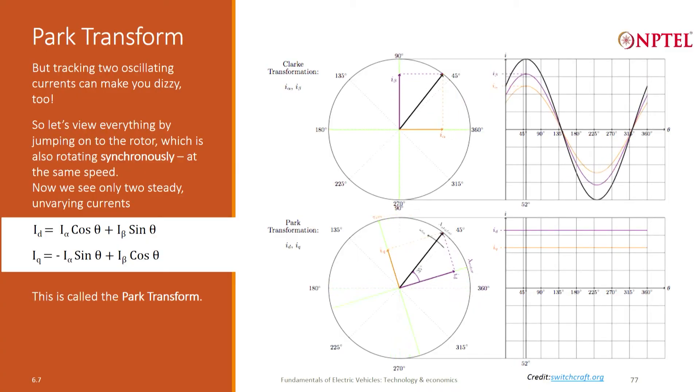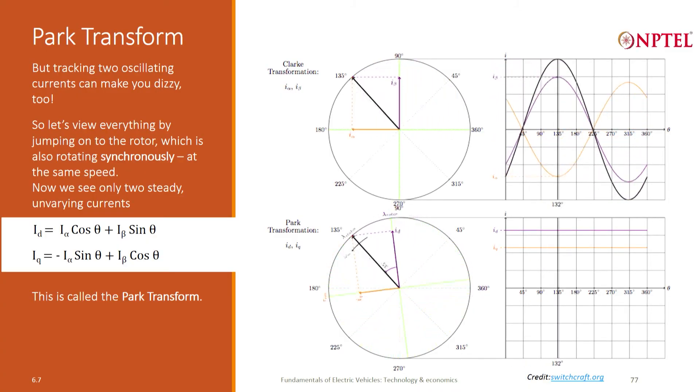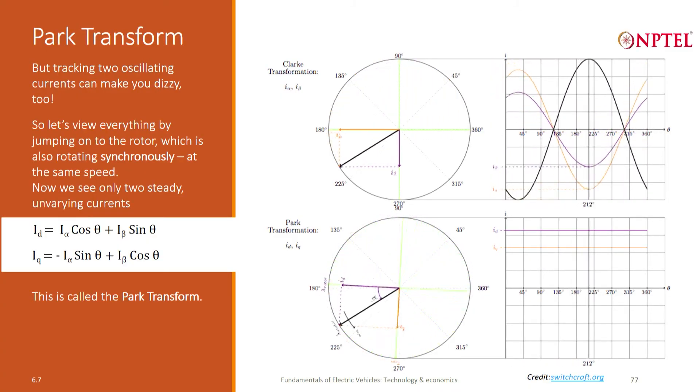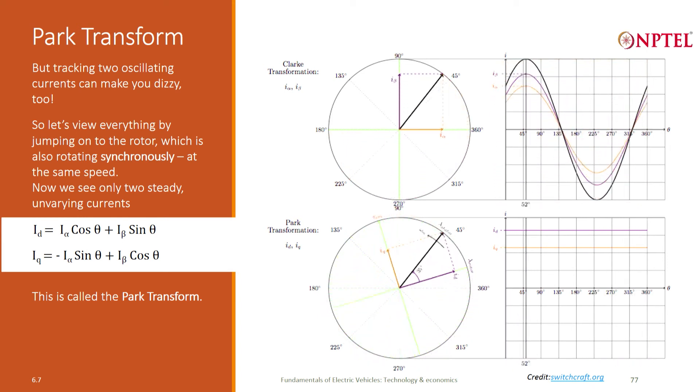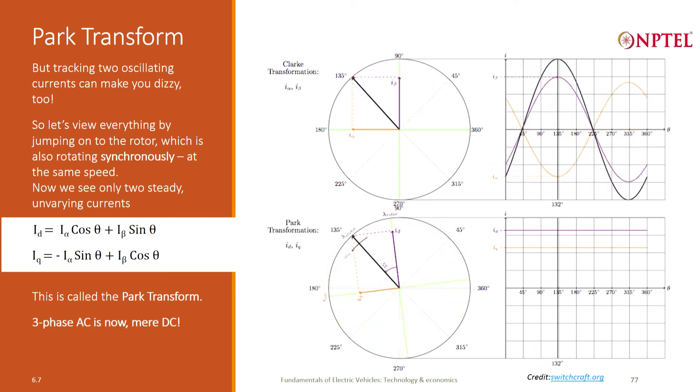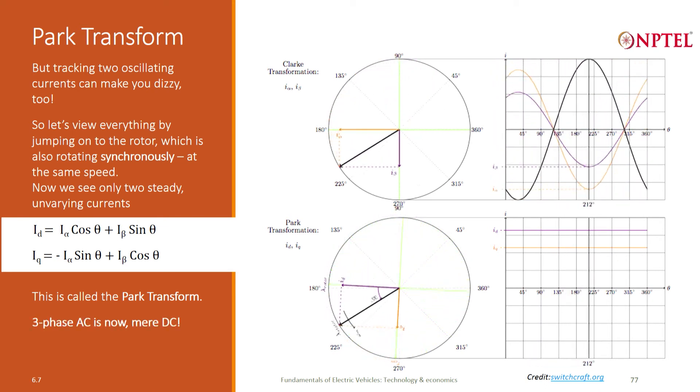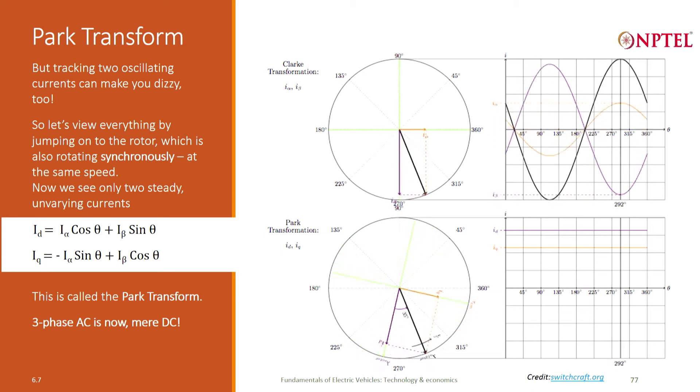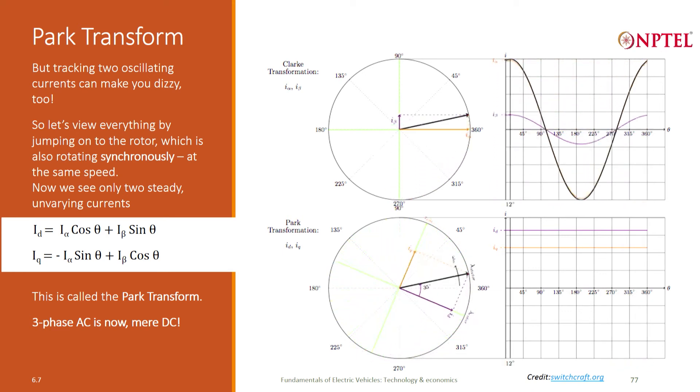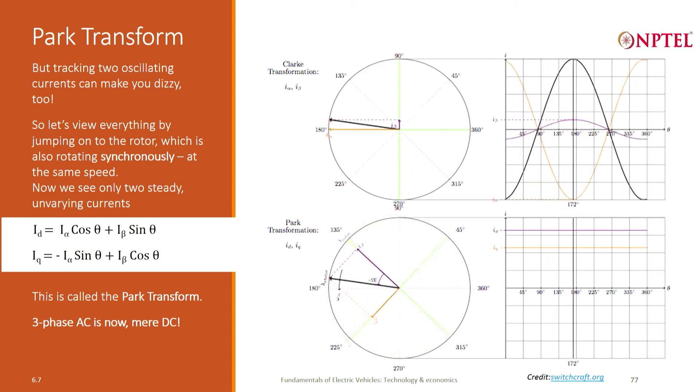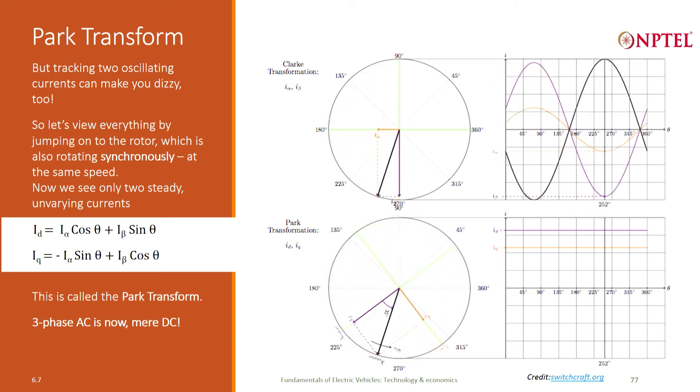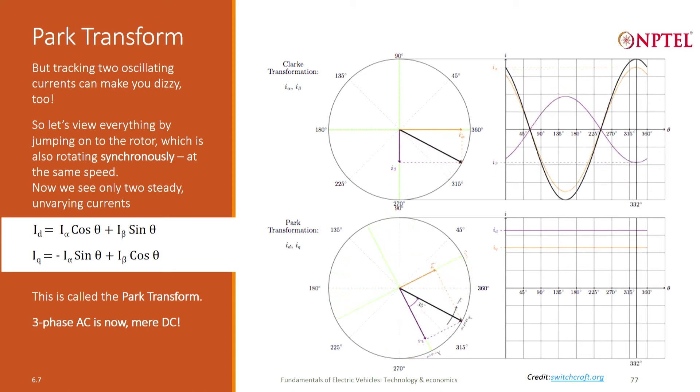So this is the Park transform. Is this clear? It is visually very simple, easy to understand and the mathematics behind it is also not very complicated - it is just some elementary trigonometry. So now we have successfully converted a three-phase AC into DC, a pair of DC currents. Any questions, feel free to ask me.